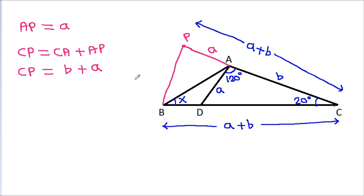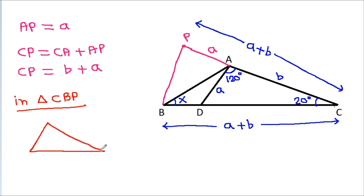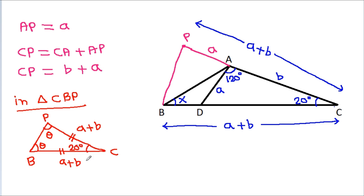Now in triangle CPB, CP is B minus A and CB is A plus B. So these two angles will be equal. Since angle ACD is 20 degrees, we have 20 degrees plus theta plus theta equals 180 degrees.